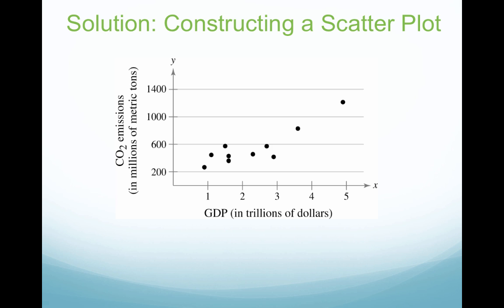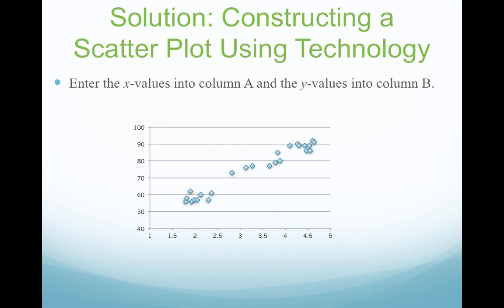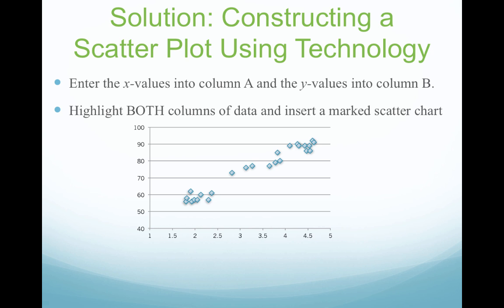Here is what our scatter plot will look like — I'll go through the actual Excel picture in just a minute. Once we have our scatter plot, we ask ourselves: do we see a linear pattern, a non-linear pattern, or no relationship? Clearly there appears to be a positive linear correlation, meaning that as GDP increases, the carbon dioxide emissions tend to increase. In Excel, enter the X values into column A, the Y values into column B, highlight both columns, and insert a marked scatter chart. This chart came straight out of Excel, and we clearly see a positive linear relationship.